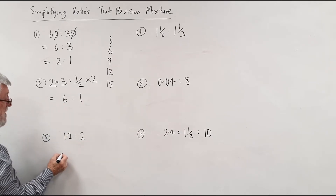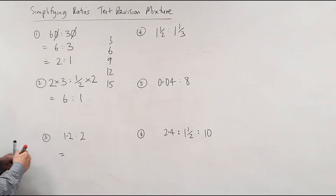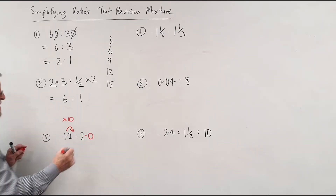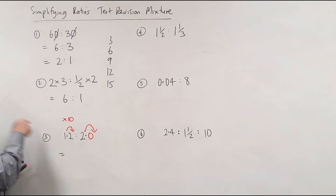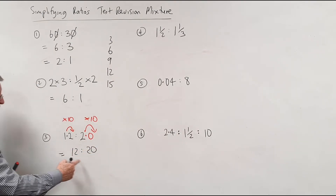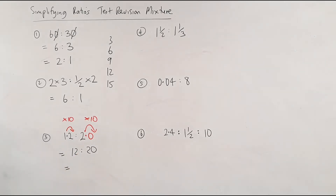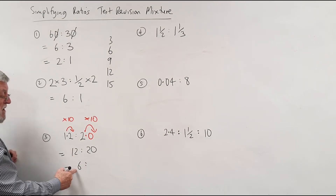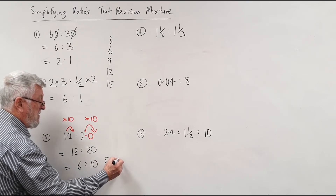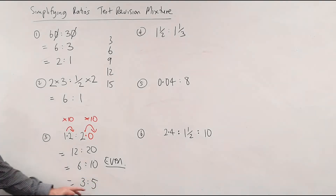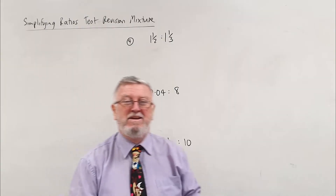Now 1.2 has a decimal. I always talk about jumping the decimal — that's the same as multiplying by 10. A lot of people write the point zero to make it more obvious. So if each number moves one decimal place, this becomes 12 and that becomes 20. They're both even, so halve them: half of 12 is 6, half of 20 is 10. They're still both even, so go again: 6 becomes 3 and 10 becomes 5. Now we're at the smallest possible numbers that can't be simplified further.